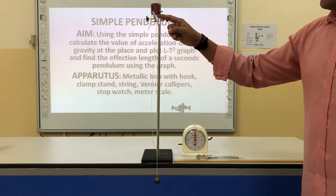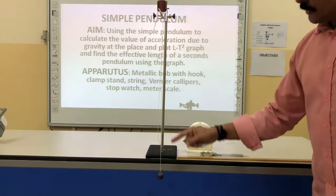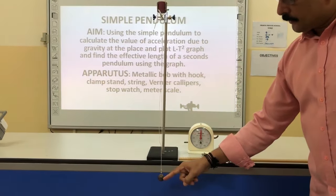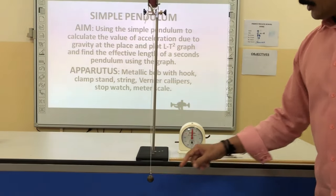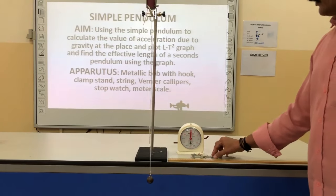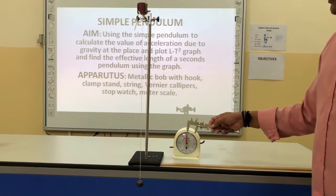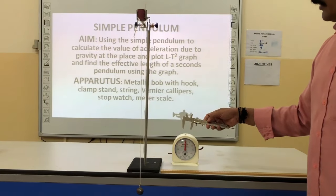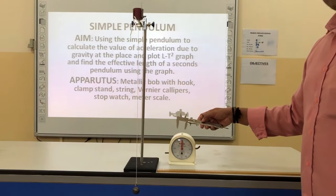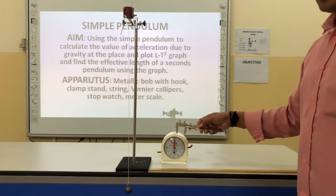The length of a pendulum is measured from the point of suspension to the center of the bob. The radius of the bob can be calculated with the help of vernier calipers.